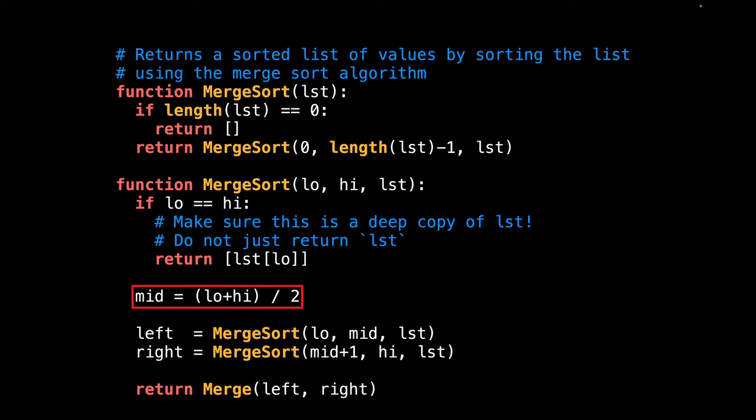Next, find the middle index of the segment by adding low plus high divided by two. Then use the middle index to recursively compute the new left and right segments. Notice that the left segment spans between low to mid and the right segment spans between mid plus one to high. So there is no overlap between each. The final step is to merge the left and the right segments on the recursive callback. And this is where the conquer phase kicks in.